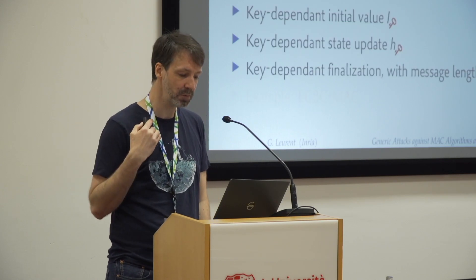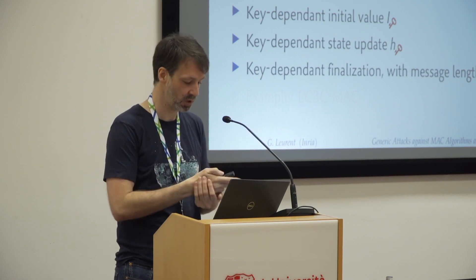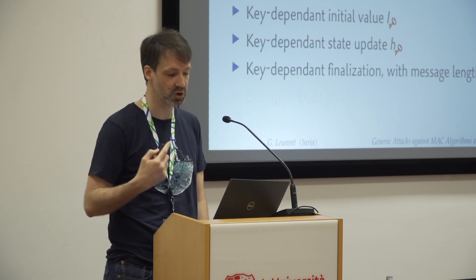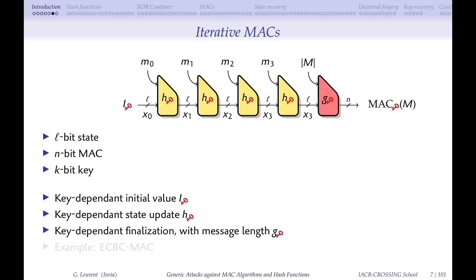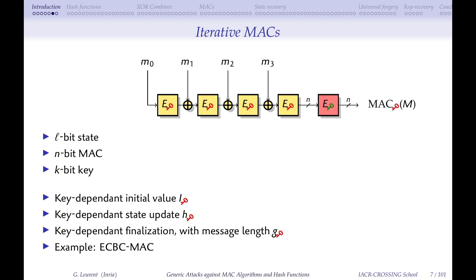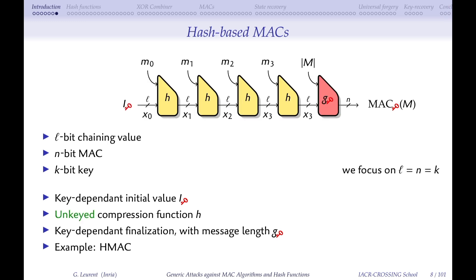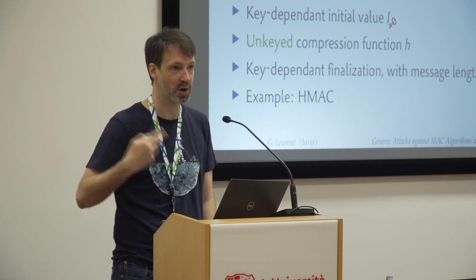MAC algorithms use an iterative structure like hash functions, but with an important difference: everything depends on the key — the initial value, the state update function, and the finalization function all depend on the key. A very common MAC is CBC-MAC, using a block cipher iteratively with a different key at the end. Another common approach is to build a MAC from a hash function, where the state update is unkeyed and only the beginning and end depend on the key.